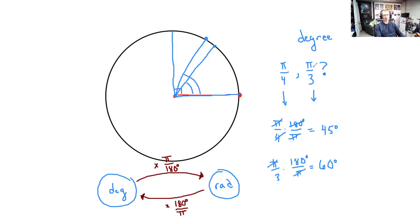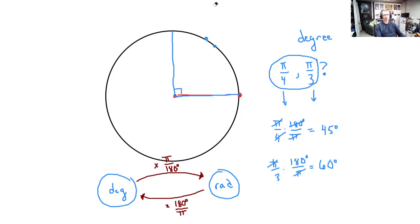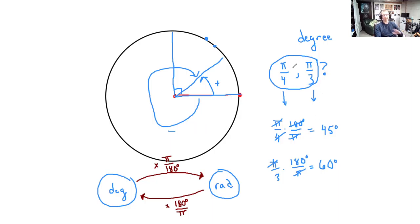Another way of thinking about it: these are both between 0 and 2 pi, so they're both angles that end before you get all the way around. They're not the same angle, which means they cannot be coterminal. It is possible if you have a positive angle between 0 and 2 pi and a negative angle between 0 and negative 2 pi for those to be coterminal. But if they're both positive and both between 0 and 2 pi, they cannot be coterminal.